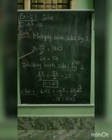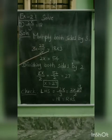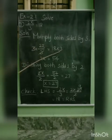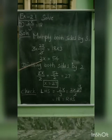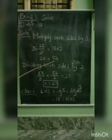Then, 3 into 2x by 3 equal to 18 into 3. The 3s cancel. Now, next we get 2x equal to 18 into 3, which is 54.